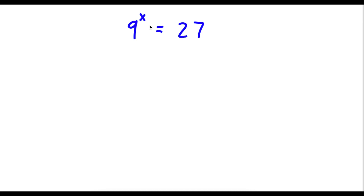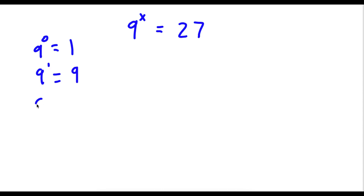So I have 9 to the power of x is equal to 27, and I want to find the value of x. This may seem like a challenging problem because if you notice: 9 to the power of 0 is equal to 1, 9 to the power of 1 is equal to 9, and 9 to the power of 2 is equal to 81. Meaning x in this case would be either a fraction or a decimal, because it can't be a whole number.